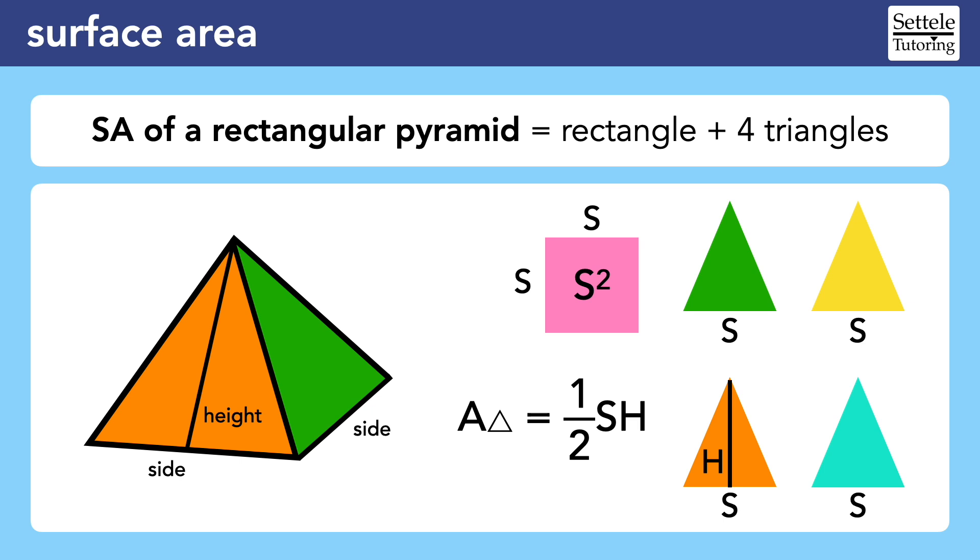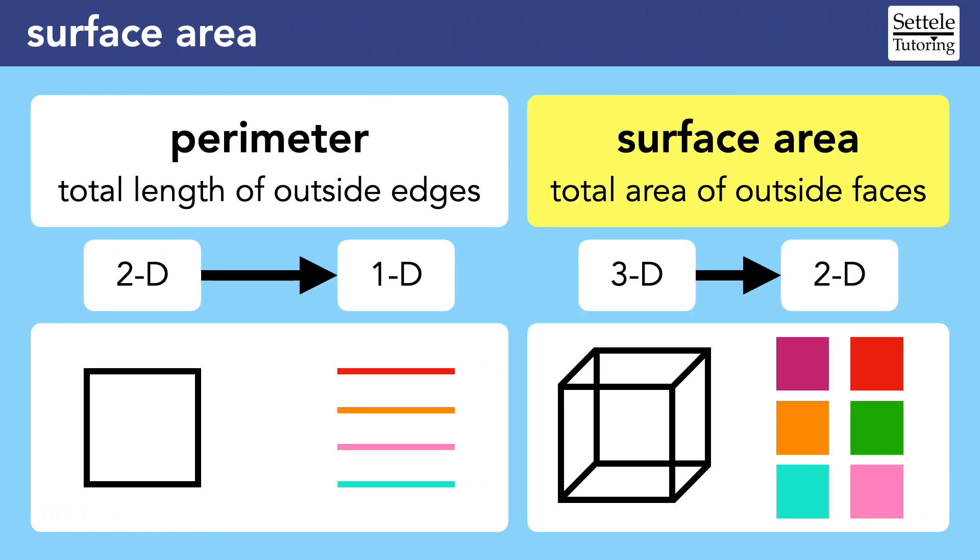Hopefully this reminds you of the key strategy for surface area. Don't overthink it. We don't need formulas for perimeter because we understand the concept. Just add up the lengths of all the outside edges.